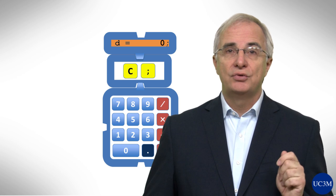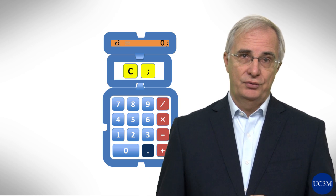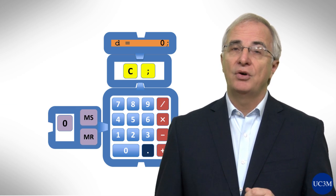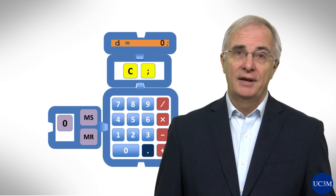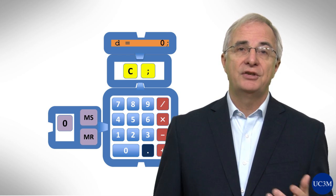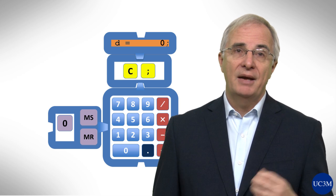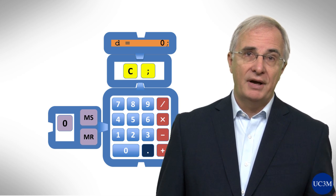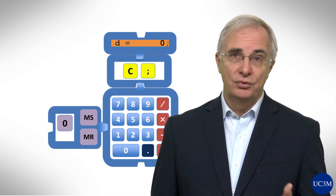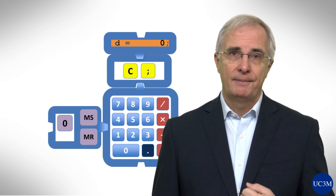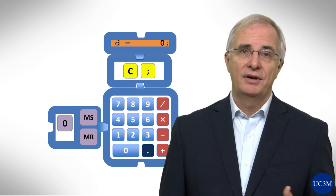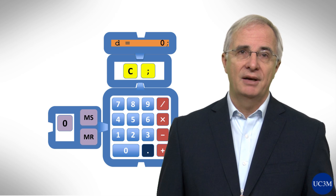Memories allow us to store value for future use. A memory might hold a value and there might be operations associated to it, like MS to store a value and MR to restore it or to recall it. Sometimes there's even a third key MC for memory clear, but we don't need that.